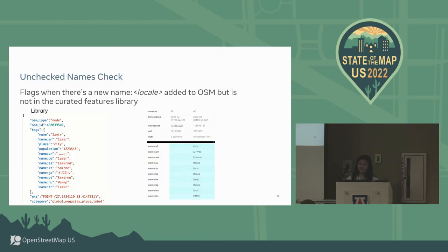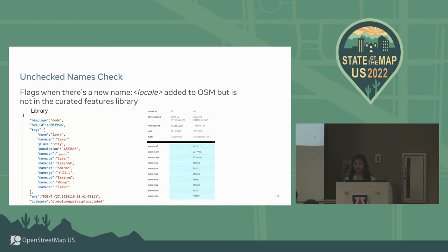The last check is the unchecked names check. A prominent feature gets flagged when a new name in a different language is added in OSM and is not currently in the library. These new names will show up on the maps, so we want a flagging system to detect this. Here's an example of a place label where we only have certain languages in the library, and then OSM adds more languages. For this case, we send it to our localization team for review, because it's in a foreign language and we can't validate it ourselves. Then we add it to our curated library.